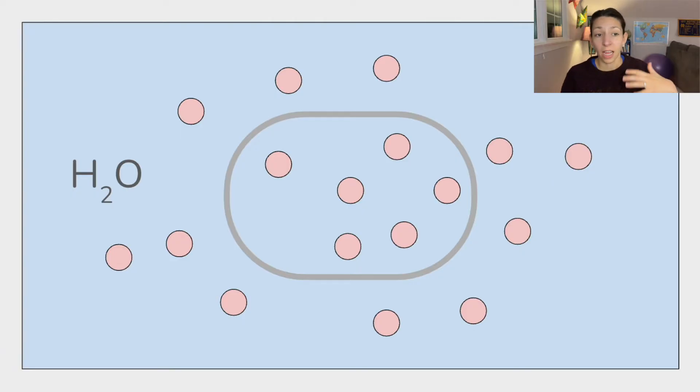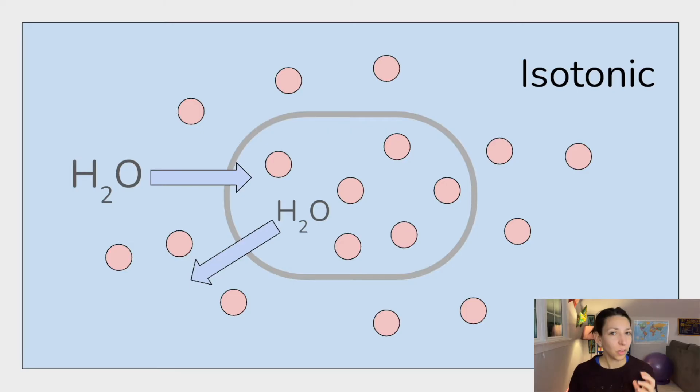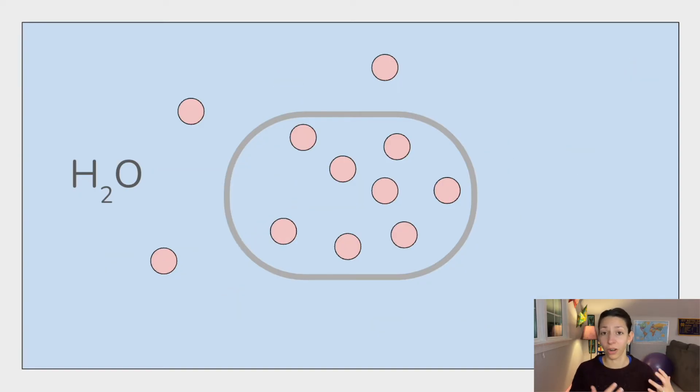So let's look at a few examples. If we have a cell and the concentration of particles in and out of the cell is relatively the same, that's called an isotonic solution. Equal on both sides. Water is still going to move in and out, but it will do so at approximately an equal rate. And so we won't have any net gain of water or net loss of water out of the cell.